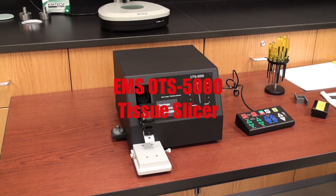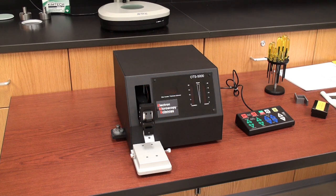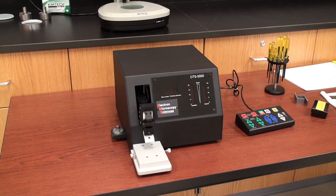This is what the unit looks like on your desktop, the main unit and the control box. Now let's have a quick look at all the accessories that come with the 5000 model.